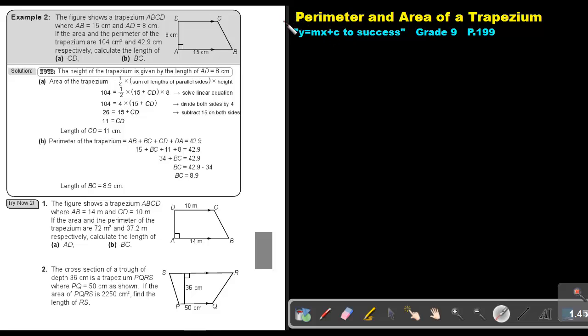Part 2. We are going to continue with the perimeter and area of a trapezium. You will find this on page 199 in the Namibia Mathematics Grade 9 textbook, Y equals MX plus C to success.